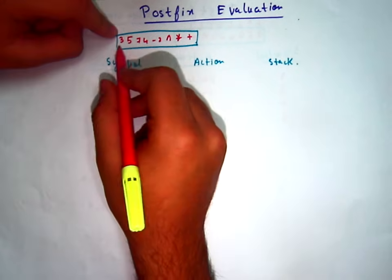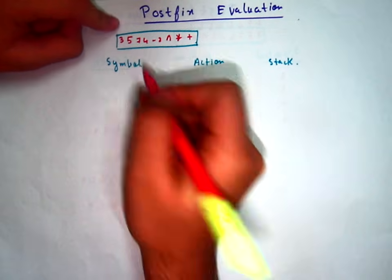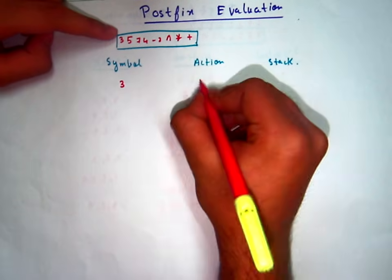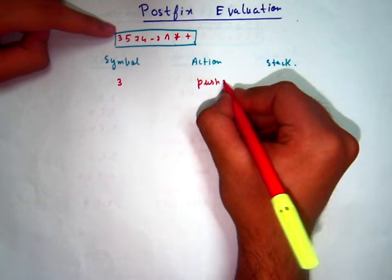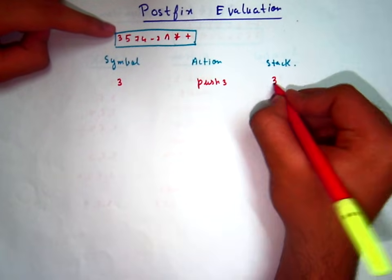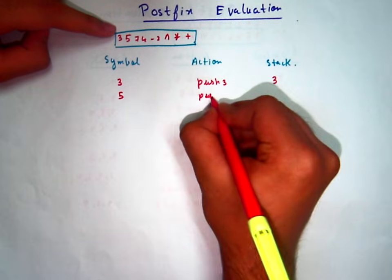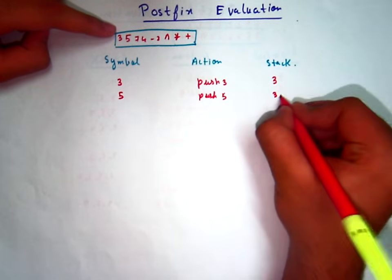We'll scan the expression character by character. So when an operand comes, push it in the stack. Push 3. Okay, operand 5, push it. 3, 5.